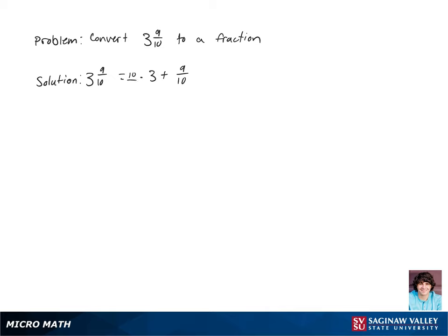Now let's get a common denominator so we can add fractions. Let's multiply 3 by 10 over 10, and we're going to get 30 over 10 plus 9 over 10. Now let's just add the numerators and keep the denominator, and our final answer is 39 over 10.